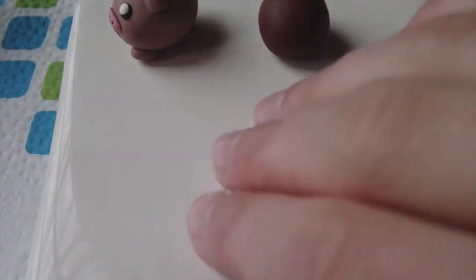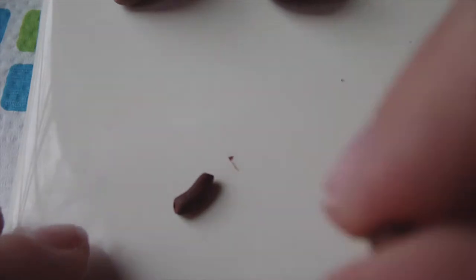To form the hamster's legs, take another piece of brown, roll it into a snake, and cut two pieces of clay off. Once you've cut two pieces of clay, roll each of these into a circle.